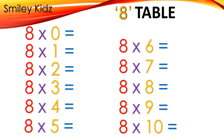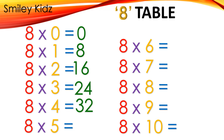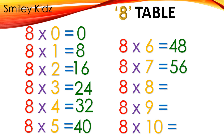Table 8: 8×0=0, 8×1=8, 8×2=16, 8×3=24, 8×4=32, 8×5=40, 8×6=48, 8×7=56, 8×8=64, 8×9=72, 8×10=80.